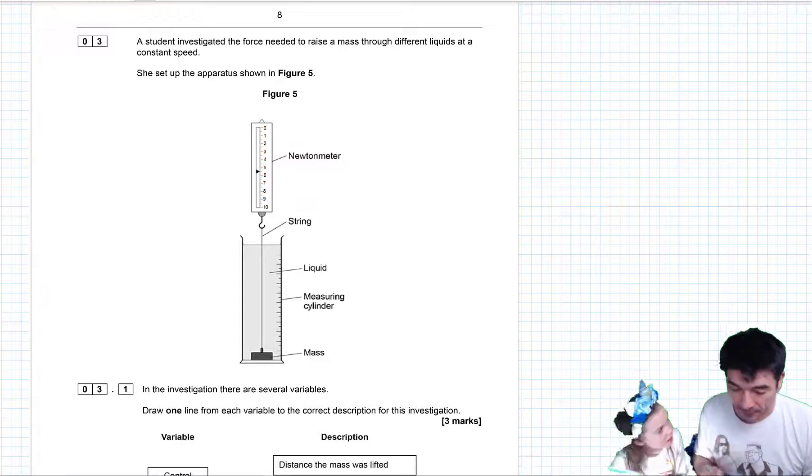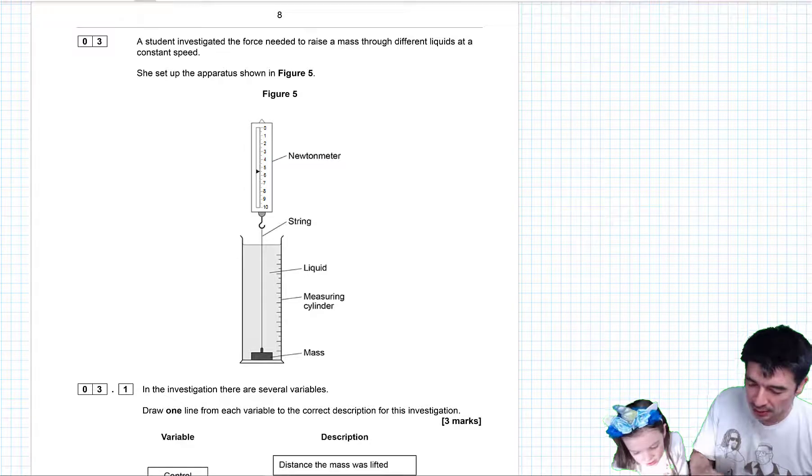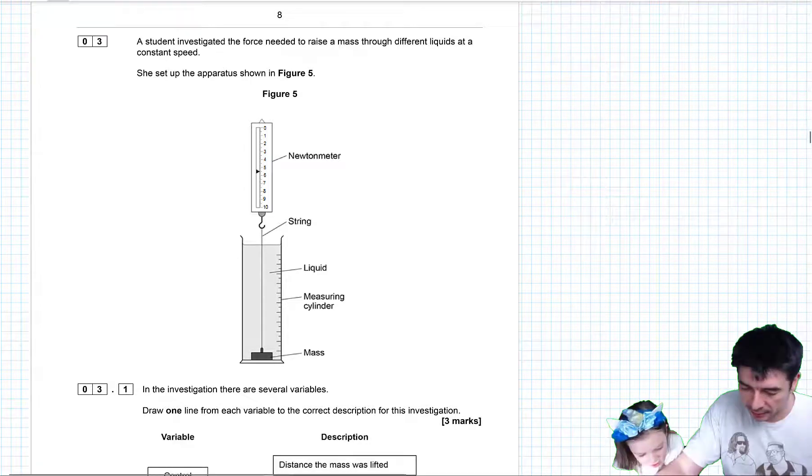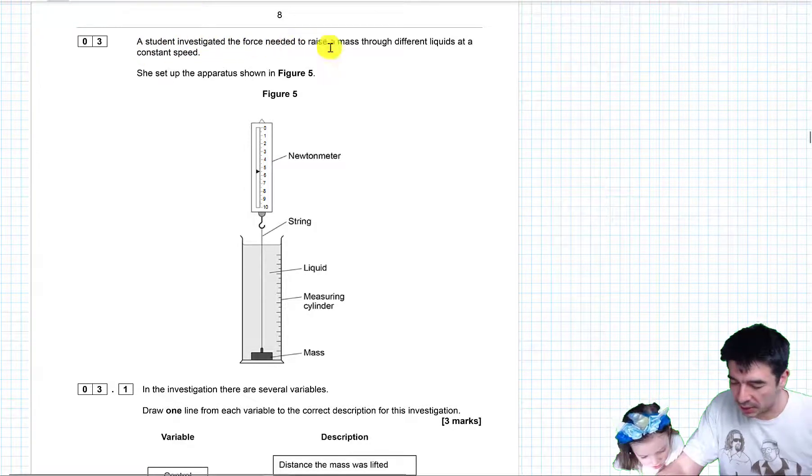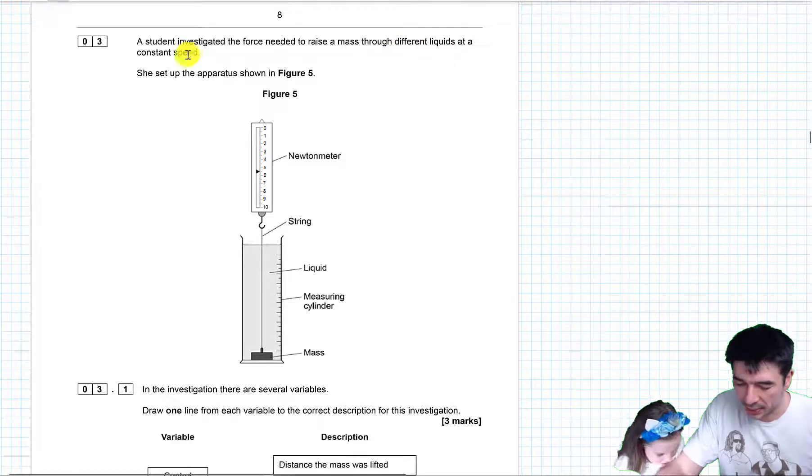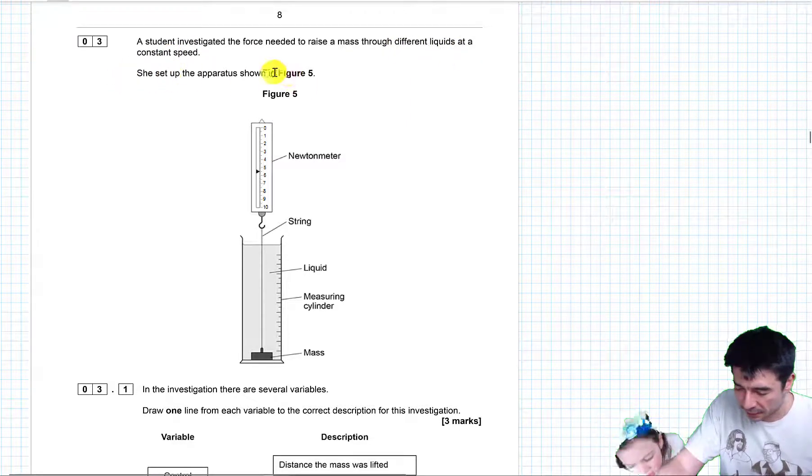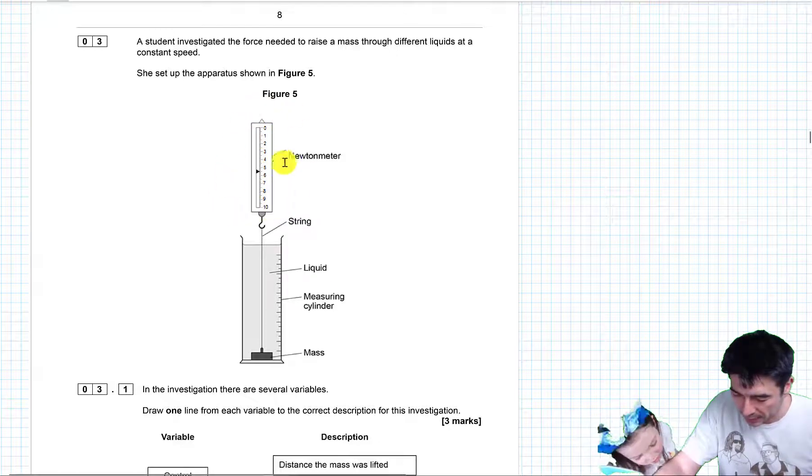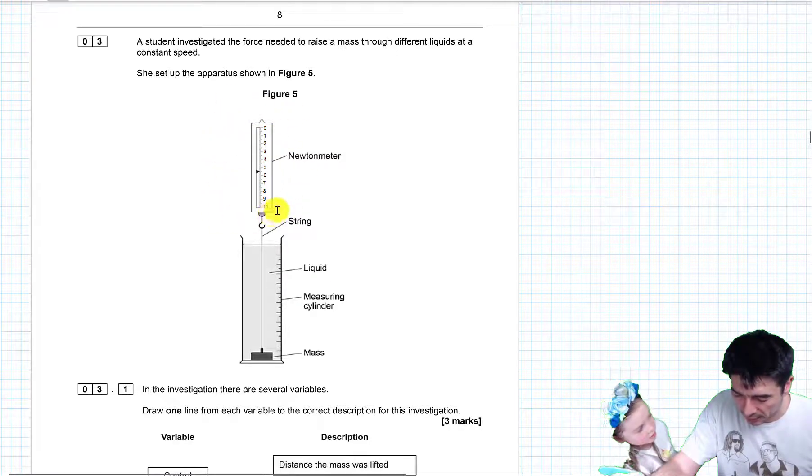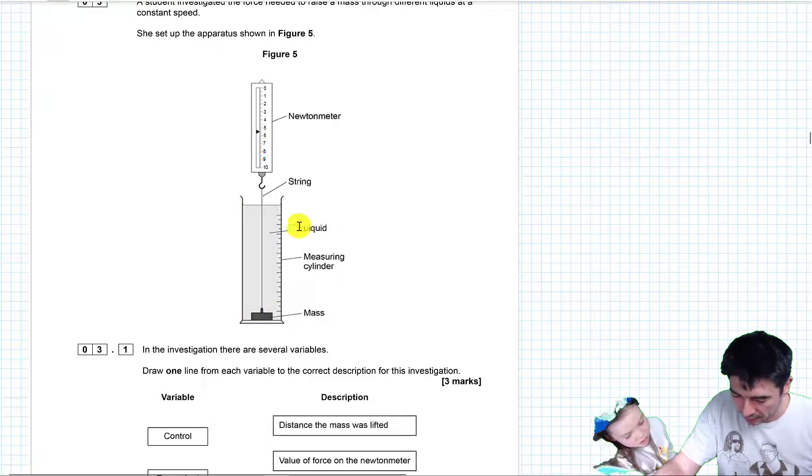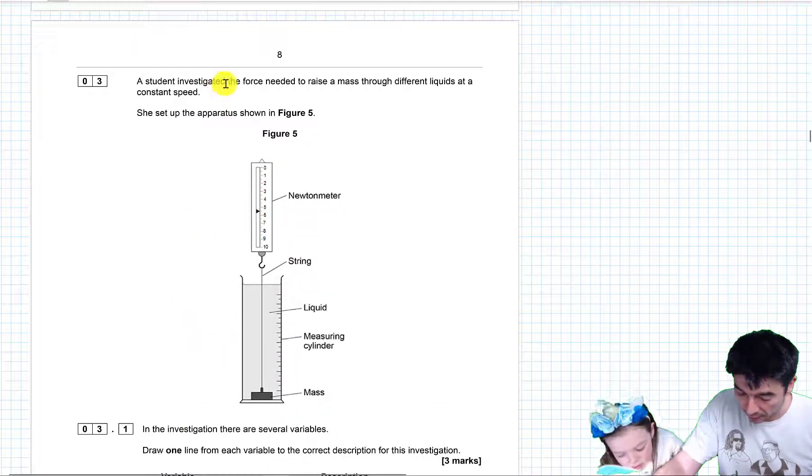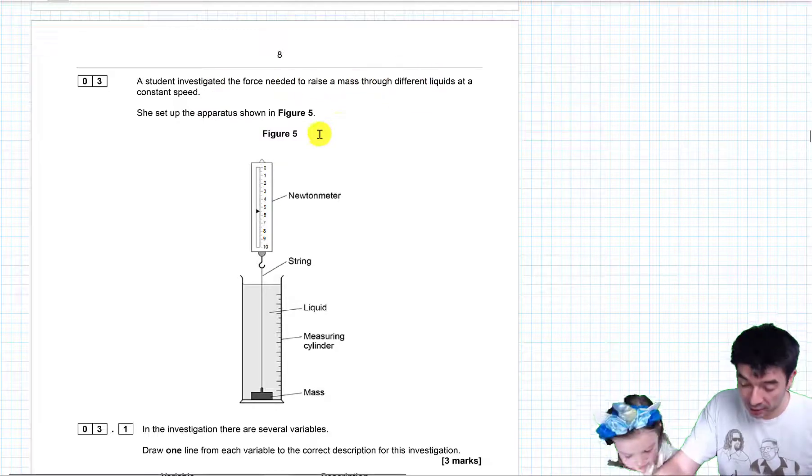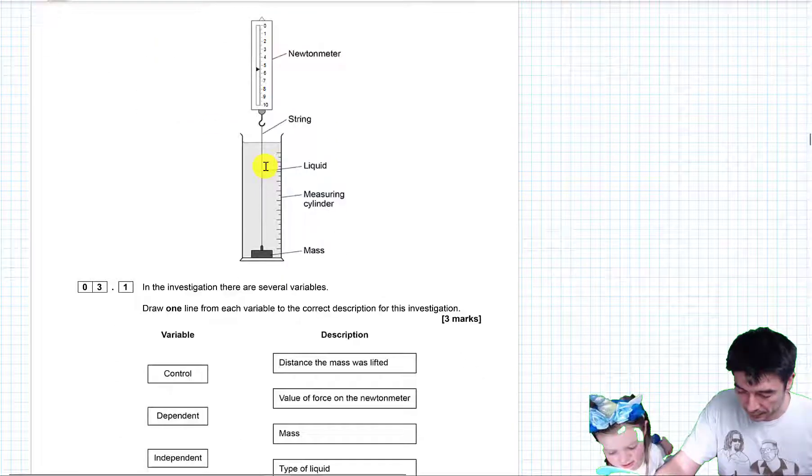Okay, so let's look at question 3. A student investigated the force needed to raise a mass through different liquids at a constant speed. She set up the apparatus as shown in figure 5. So here we are, we have a Newton meter, same one as from question 2 by the looks of things, attached by a piece of string to a mass. There's some liquid. And it says she's going to investigate the force needed to raise the mass through different types of liquid at a constant speed.